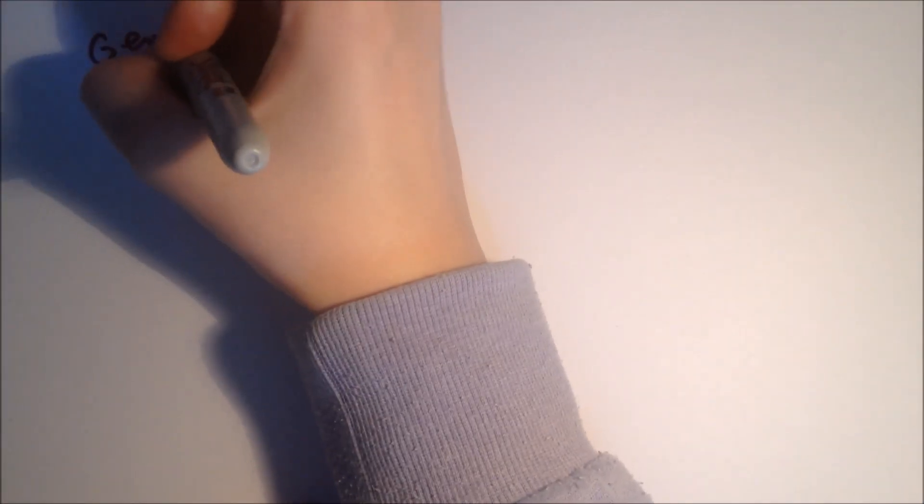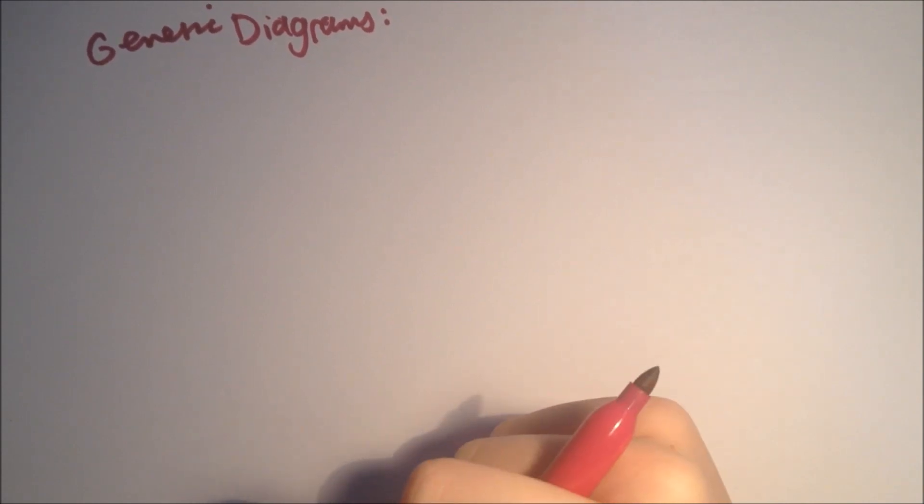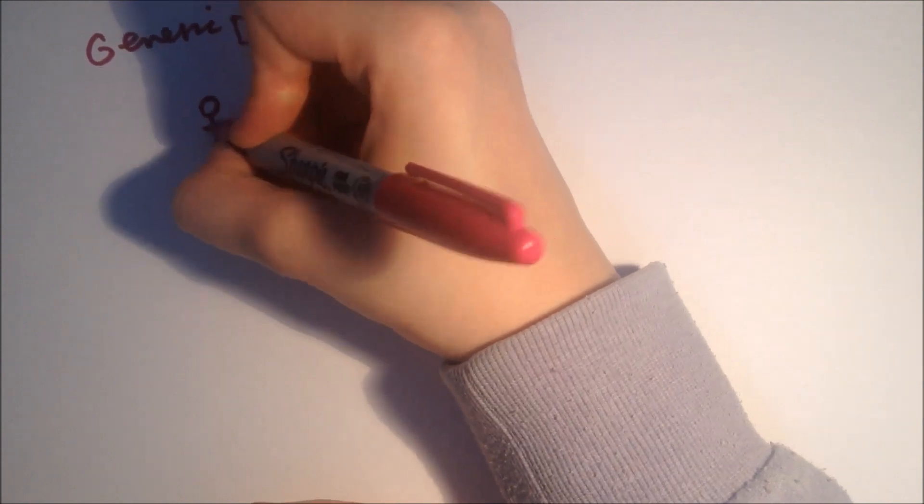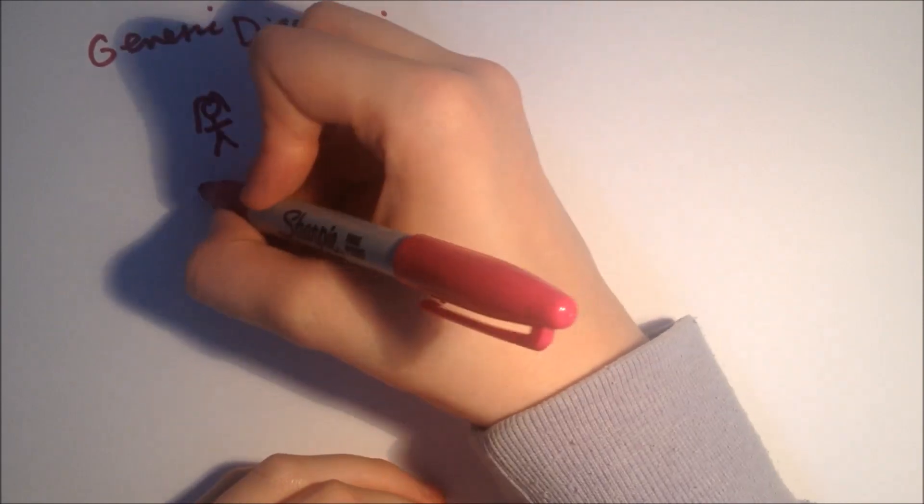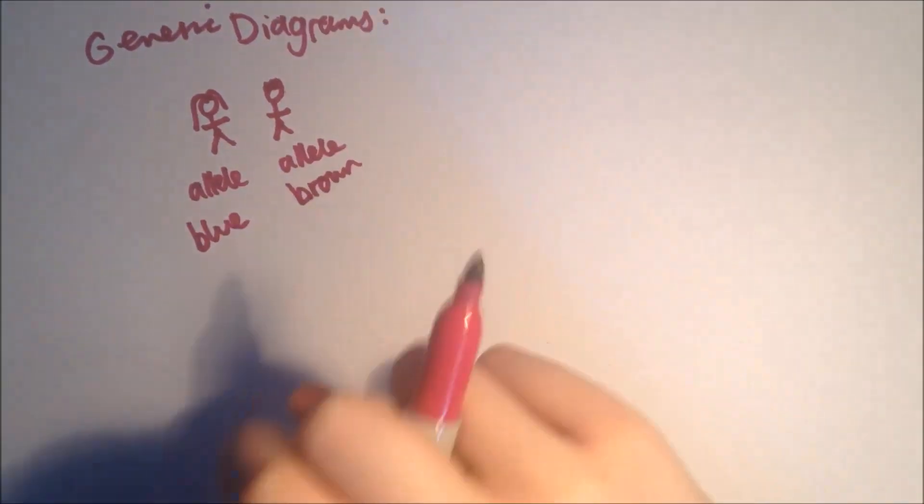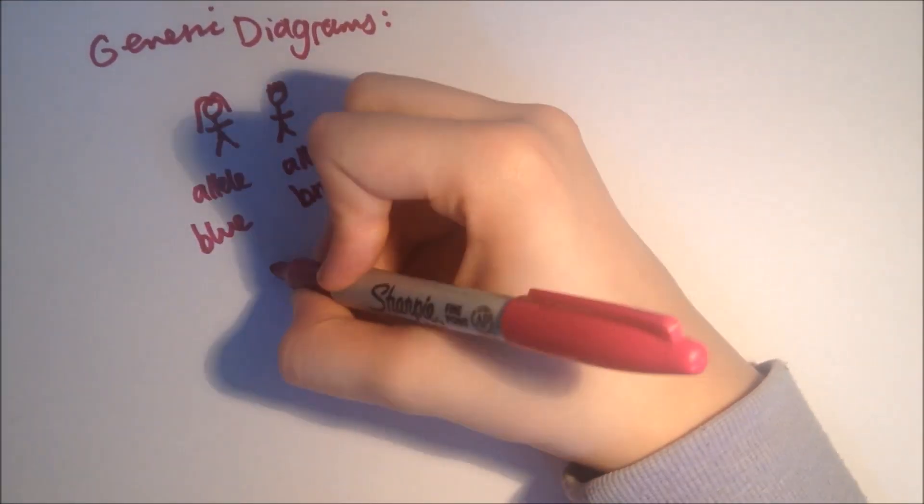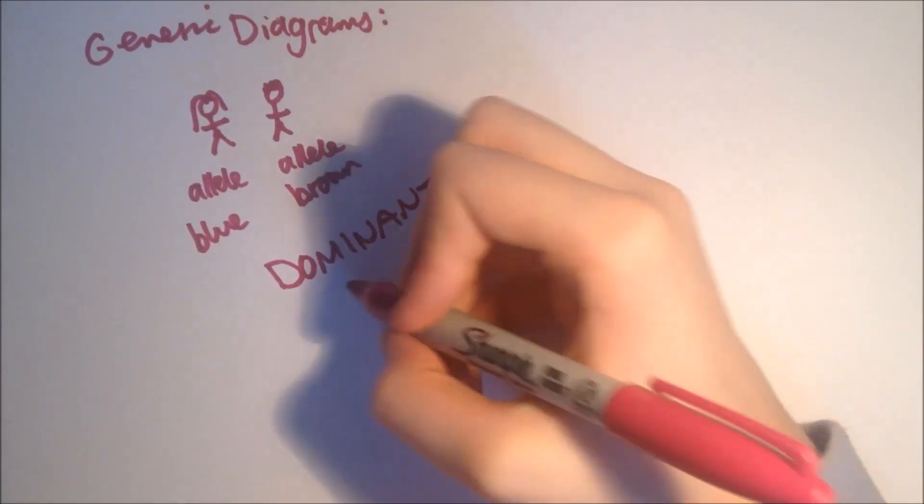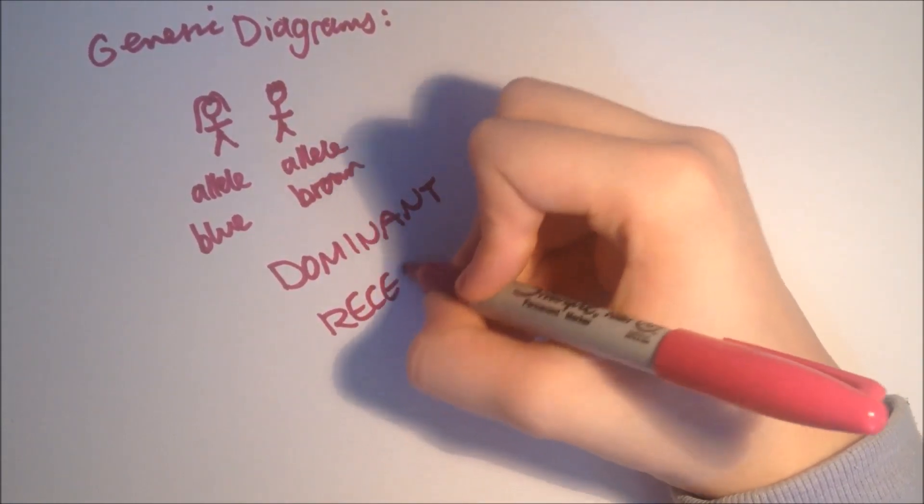Our next section is genetic diagrams, and they show the possible genes of offspring. Most of the time you have two versions of a gene, which are the alleles, one from each parent. If the alleles are different, you have instructions for two different versions. For example, if your mum has blue eyes but your dad has brown, you only show one version, not a mixture of blue and brown. The version that appears is dominant, and the other is recessive if there's no dominant alleles present.